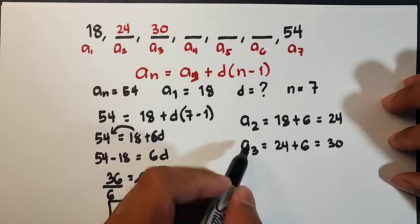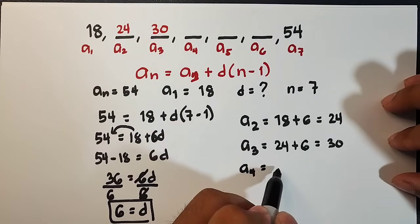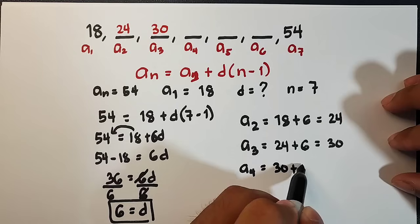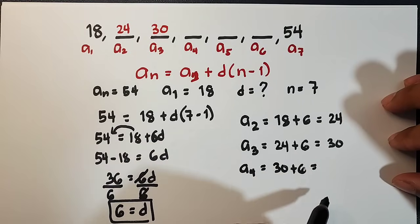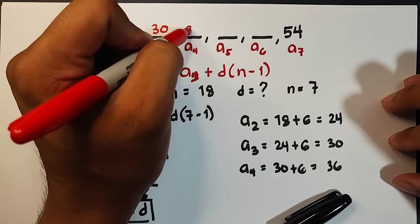Next, for the a sub 4, a sub 4 is equal to 30 plus 6, and the answer is 36. So your fourth term is 36.